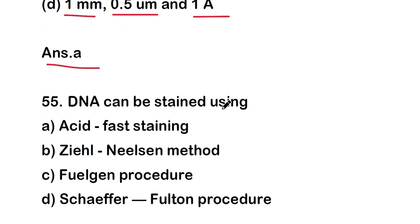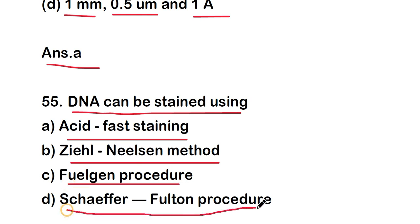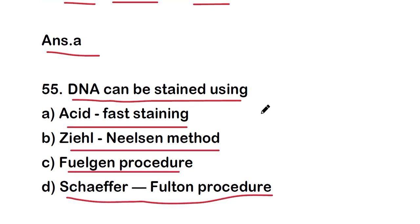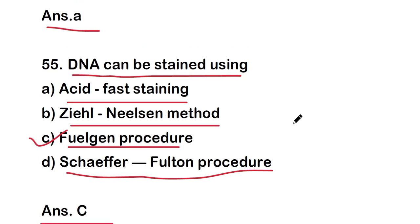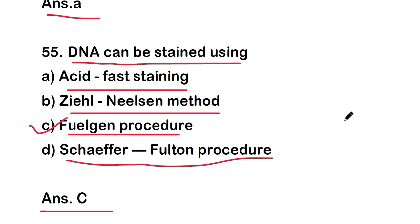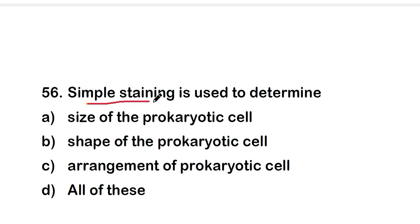Next question: DNA can be stained using — acid-fast staining, Ziehl-Neelsen method, Feulgen procedure, or Schaffer-Fulton procedure? The right answer is option C — the Feulgen procedure. DNA can be stained using the Feulgen procedure.